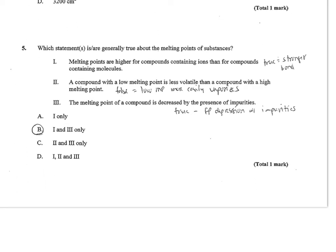Number 5 says, which statement is generally true about the melting points of substances? Melting points are higher for compounds containing ions than for compounds containing molecules. That's true, ionic bonds are typically much stronger than covalent bonds. A compound with a low melting point is less volatile than a compound with a high melting point. That's not true, because volatile means it easily vaporizes, so low melting point would be more volatile. The melting point of a compound is decreased by the presence of impurities. That's true, freezing point depression. So B, 1 and 3 only.